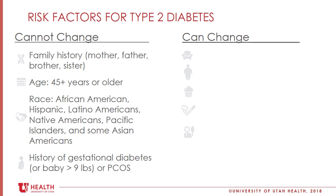The second non-modifiable risk factor is age. Once we reach 45 years or older, we have an increased risk of developing type 2 diabetes. The third factor includes certain races and ethnicities that are genetically predisposed to develop type 2 diabetes, including African Americans, Hispanics, Latino Americans, Native Americans, Pacific Islanders, and some Asian Americans. The last item on the left is a history of gestational diabetes, a baby born greater than nine pounds, or a history of PCOS — all of which also increase the risk of developing type 2 diabetes.